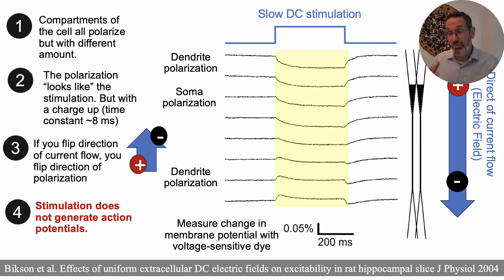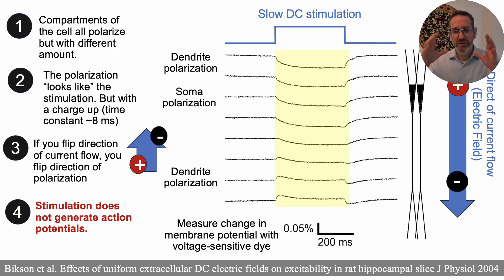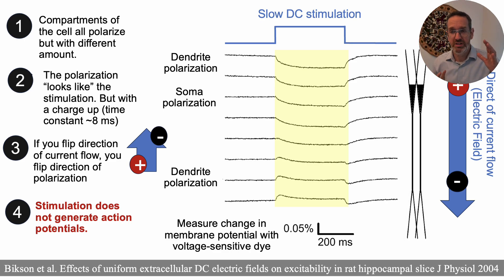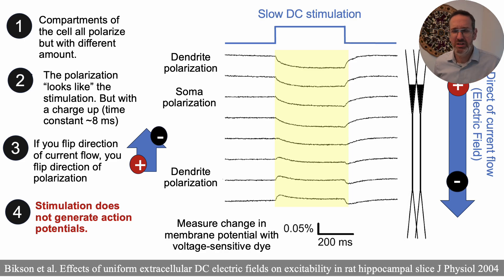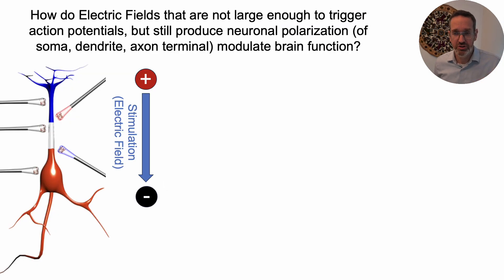A big, maybe obvious point given the context: the stimulation doesn't generate action potentials. When the field is turned on, you don't see a rapid series of action potentials — what you see is a change in polarization, a small change. It's only about a millivolt in this particular experiment, and because of that, it's not enough to generate action potentials. So the basic idea of subthreshold stimulation is that we're not looking for direct action potential generation.